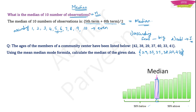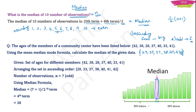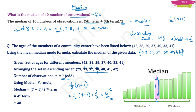With 7 observations (odd), we apply (1/2)(n + 1) = (1/2)(7 + 1) = 4. The 4th term in the ascending list 29, 33, 37, 38, 40, 41, 42 is 38. Therefore, the median is 38.